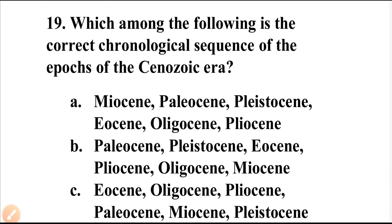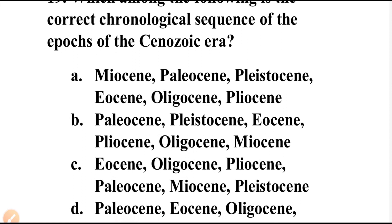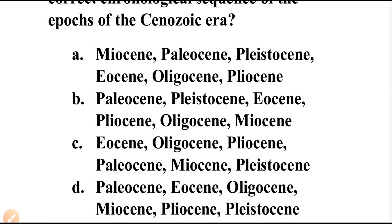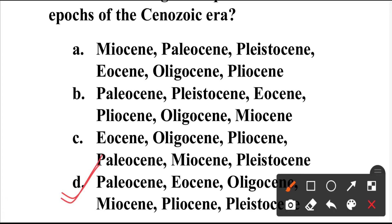Question number nineteen: Which is the correct chronological sequence of the epochs of the Cenozoic era? The confusion is between Palaeocene and Pleistocene. Remember: the correct order is Palaeocene, Eocene, Oligocene, Miocene, Pliocene, Pleistocene. Option B is the correct answer.